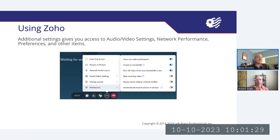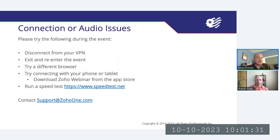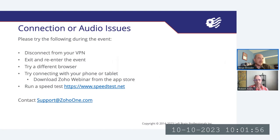If you have any connection or audio issues, please try the following solutions: turn off your VPN, exit and re-enter the event, try using a different browser, or connect from your personal PC, phone, or tablet. You can download the Zoho webinar from your app store, or run a speed test using speedtest.net.